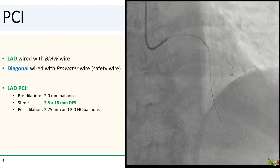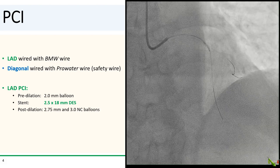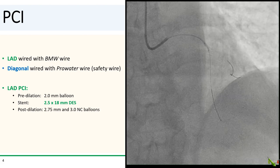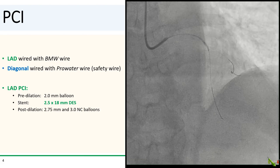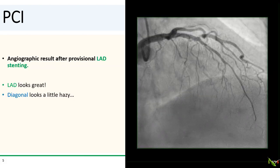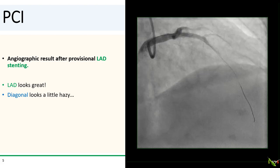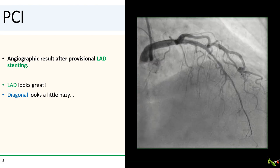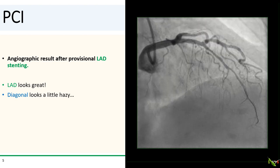We wired the LAD and diagonal fairly easily with workhorse wires. We pre-dilated the LAD with a 2.0 millimeter balloon, stented it with a 2.5 by 18 millimeter DES, and post-dilated with 2.75 and 3.0 millimeter NC balloons. Here is the result after provisional stenting — the LAD looks great, and the diagonal was patent, but does look a little bit hazy in this view.